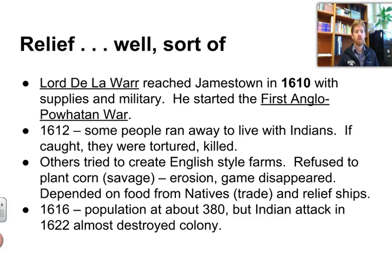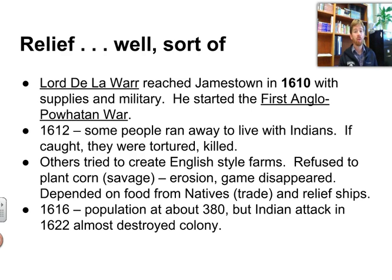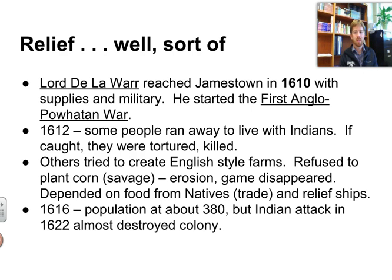Relief came again in 1610 when Lord Delaware — you can understand where the name Delaware comes from now — arrived at Jamestown with supplies and military reinforcements. There were a lot of hostilities with the natives, and he was determined to squelch those. He started what's called the first Anglo-Powhatan War — Anglo means English — the first war between England and the Powhatans. There were three wars total; by the time all the wars ended in the 1680s, the Powhatan people were extinct. Also during this time, some Jamestown settlers ran away to live with the Indians, seeing they were having an easier time. However, if caught, they were often tortured and killed.